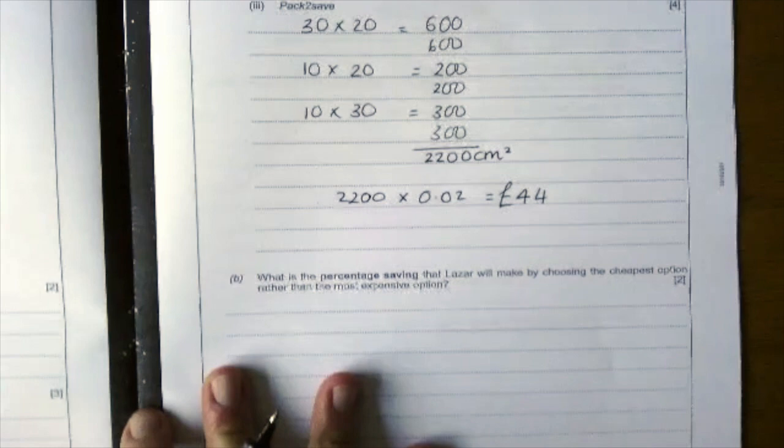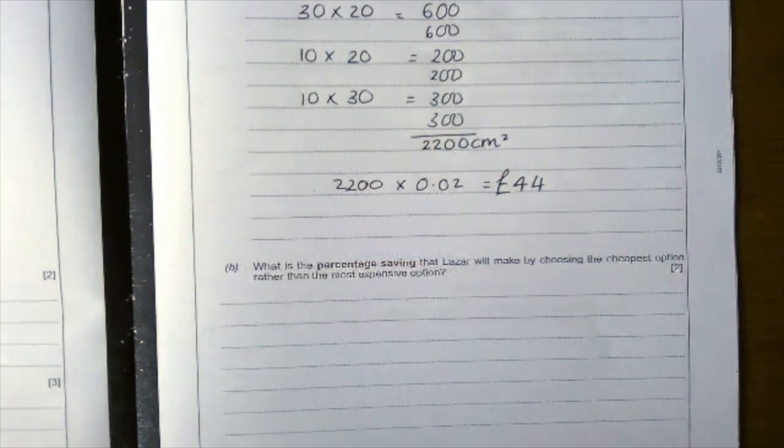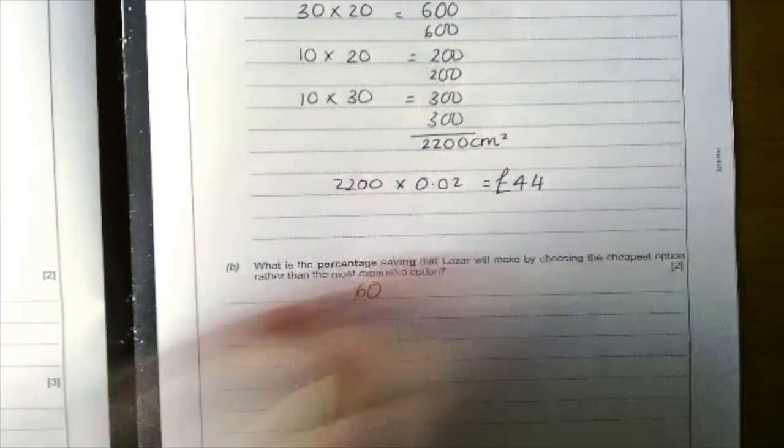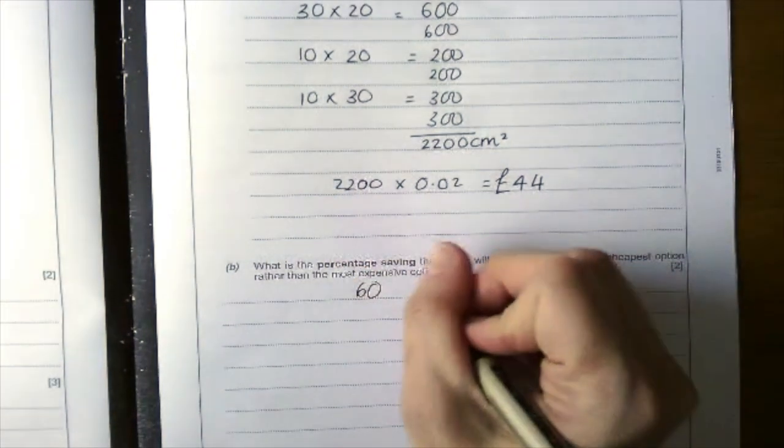The last part is what is the percentage saving that Lars will make by choosing the cheapest option rather than the most expensive. Now the most expensive is DirectGo at 60 and the cheapest was ParcelMax at 36.